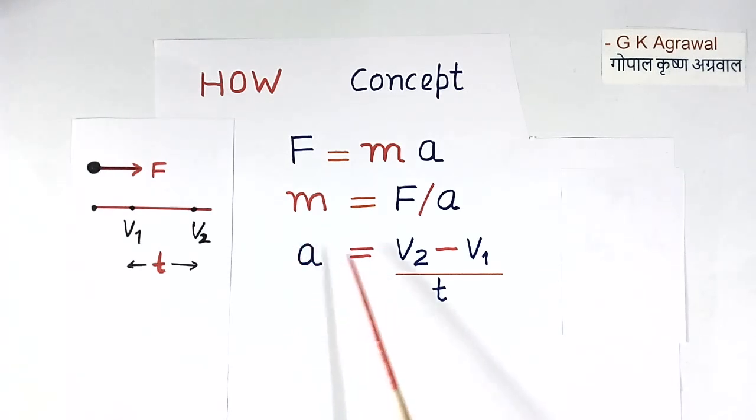So acceleration is equal to velocity V2 minus velocity V1 divided by T. This V2 minus V1 is the difference in velocity between those two points at the gap of time T.